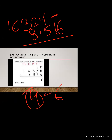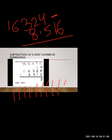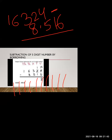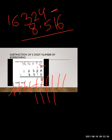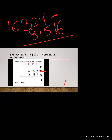What is 14 minus 6? Let's count by drawing lines. We draw 14 lines, then we cut 6 of them. Counting the remaining lines: 1, 2, 3, 4, 5, 6, 7, 8. There are 8 lines remaining. So the answer is 8. We write 8 in the unit place.